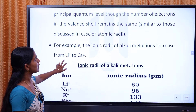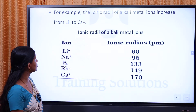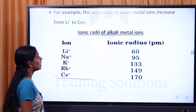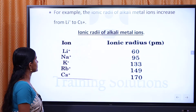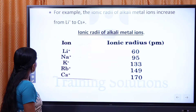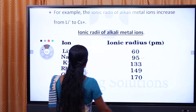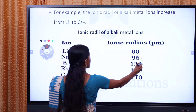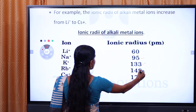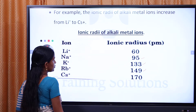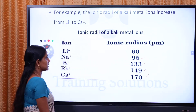For example, taking the alkali metal ions: lithium plus and caesium plus. The Na⁺ ionic radius is 95 picometers, K⁺ is 133 picometers, Rb⁺ is 149 picometers, and Cs⁺ is 170 picometers.